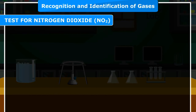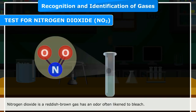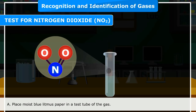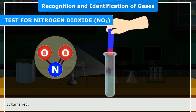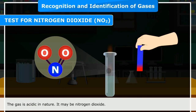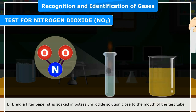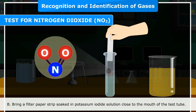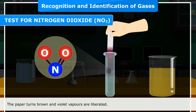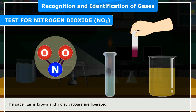Test for nitrogen dioxide (NO₂): Nitrogen dioxide is a reddish-brown gas with an odor often likened to bleach. Confirmatory test A: Place moist blue litmus paper in the gas — it turns red, indicating the gas is acidic. Confirmatory test B: Bring a filter paper strip soaked in potassium iodide solution close to the gas — the paper turns brown and violet vapors are liberated. This confirms that the gas is nitrogen dioxide.